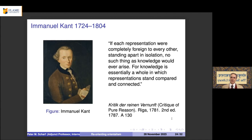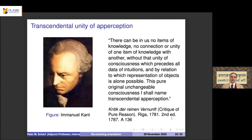Kant says: if each representation were completely foreign to every other, standing apart in isolation, no such thing as knowledge would ever arise — for knowledge is essentially a whole in which representations stand compared and connected with each other. There can be no unity of knowledge without that unity of consciousness which precedes all data of intuitions. He picks up on what Locke had recognized: that consciousness is fundamental.